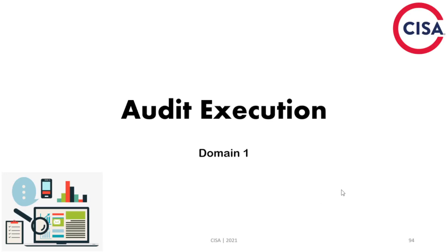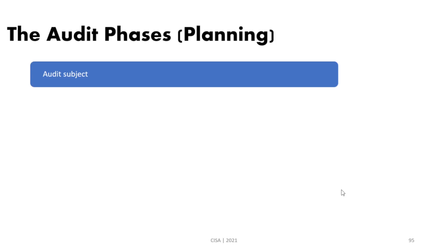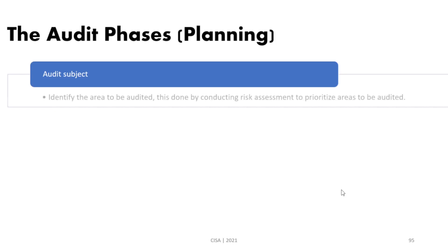Hello and welcome again. In this part we will discuss the audit execution. Audit phases start with the planning. While we are planning for our audit, we need to identify what is the audit subject. Audit subject is simply identifying the area that we need to be audited, and this can be done by doing a risk assessment. Our audit should be based on risk-based assessment.